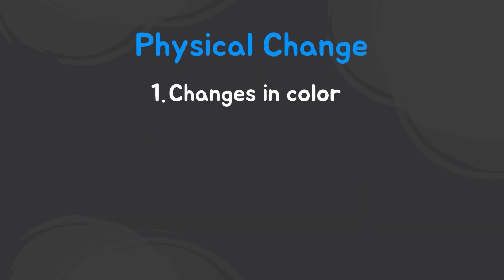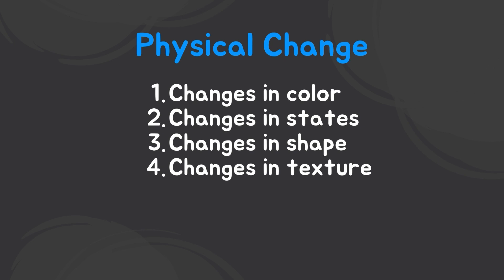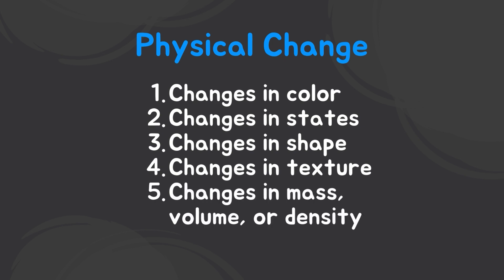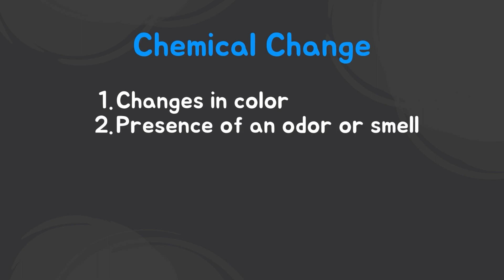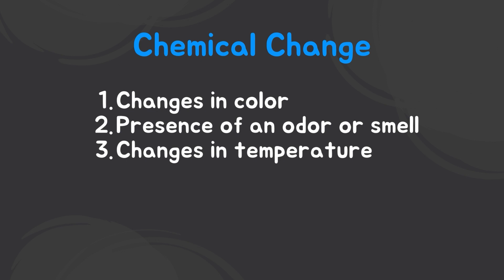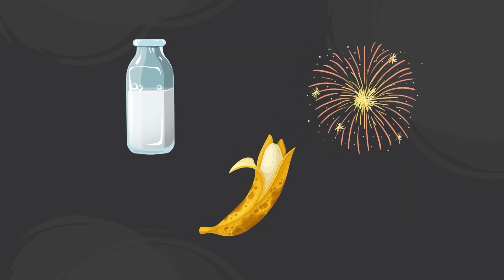With chemical reactions, there are different types of changes. Physical changes can include changes in color, changes in state such as states of matter, changes in shape, changes in texture, and changes in physical properties such as mass, volume, or density. Chemical changes, on the other hand, are what happens to the final product when a chemical reaction takes place. Some of these chemical changes can include changes in color, presence of an odor or smell, changes in temperature, presence of bubbles, and a solid precipitate forming at the bottom where the liquids are reacting. Examples of chemical changes are sour milk, a rotting banana, and fireworks.